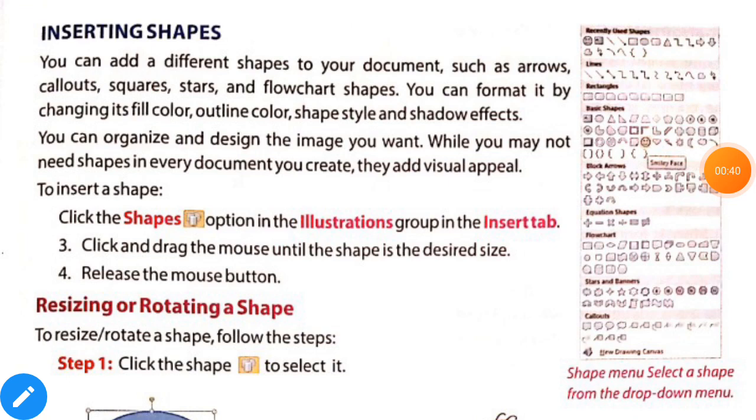First of all we will know about inserting shapes. Children you can add different shapes to your document such as arrows, callouts, squares, stars and flowchart shapes. You can format it by changing its fill color, outline color, shape style and shadow effects.